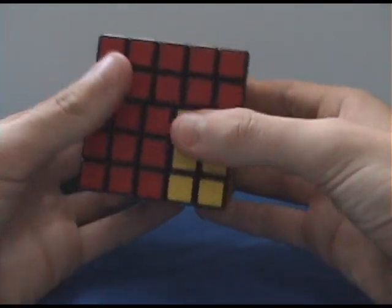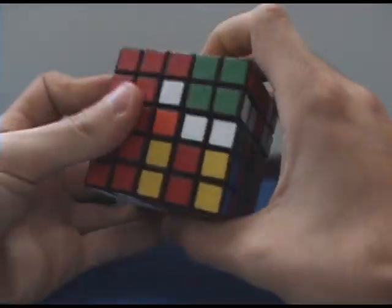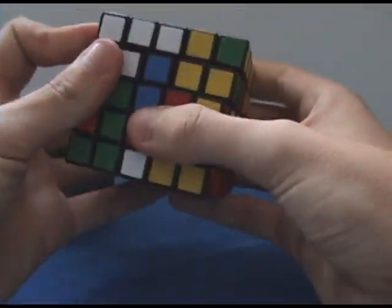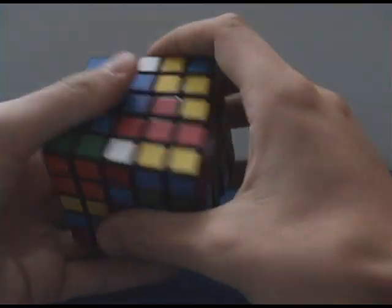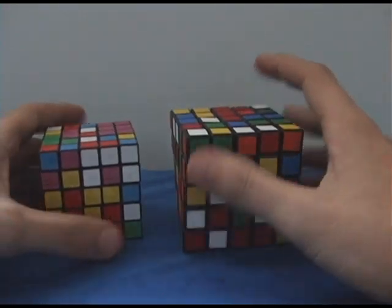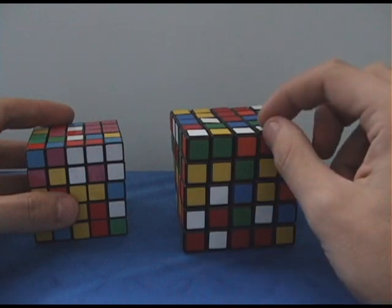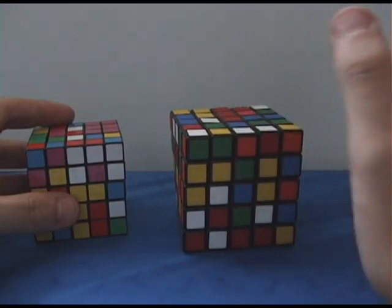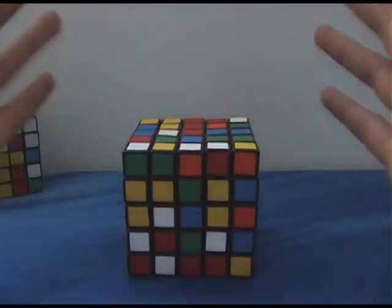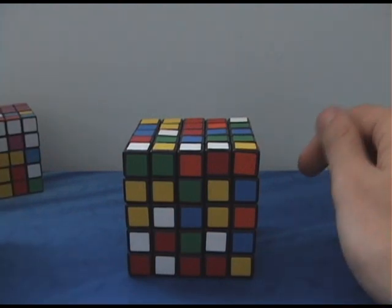So, the solution we're going to be using is the reduction method for the 5x5. This is going to be very similar to my 4x4 tutorial. So, if you've seen that video, this will be really easy for you. The way this method works, if you don't already know, we're going to solve the centers, we're going to solve the edges, and then we're going to solve it as if it were a 3x3. So, basically, we're reducing the 5x5 into a 3x3 solve. And that's where the method gets its name from, reduction.